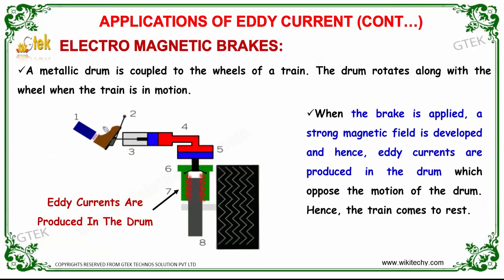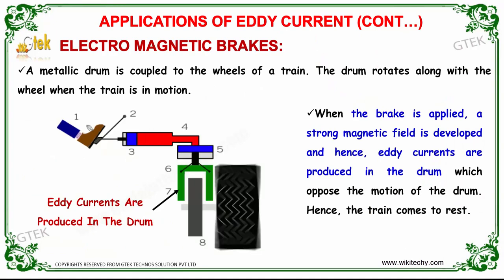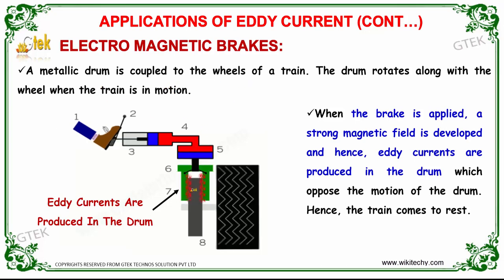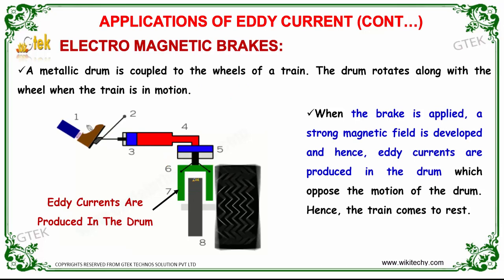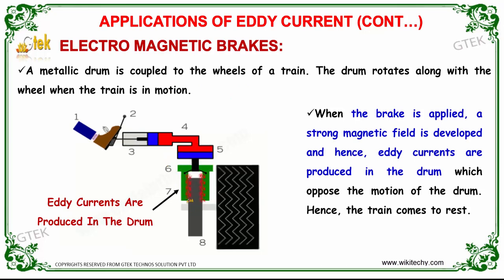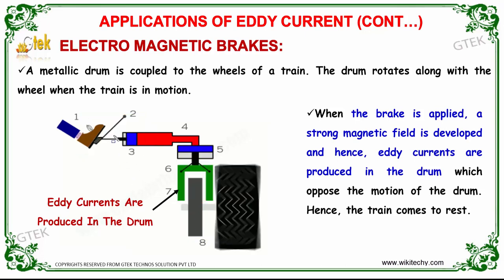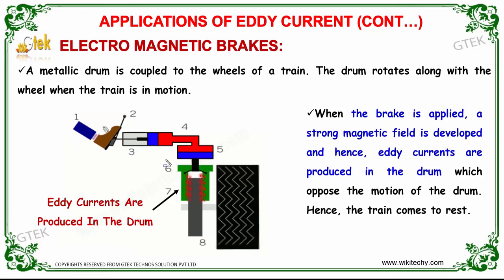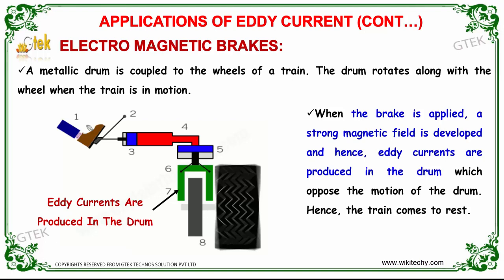Another application of eddy current involves electromagnetic brakes. A metallic drum is coupled to the wheels of a train and rotates along with the wheel when the train is in motion. When the brake is applied, a strong magnetic field is developed, hence eddy current is produced in the drum, which opposes the motion of the drum and the train comes to rest.